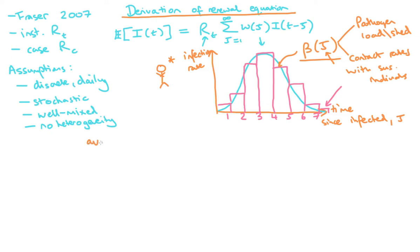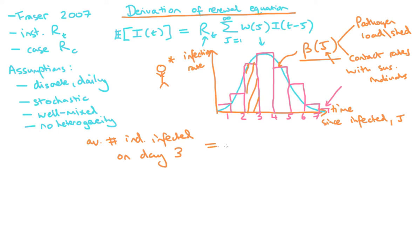We can ask: what is the average number of individuals that a person will infect on day three since they were infected? From the graph, the average number of individuals that person would infect on day three is just the area under the graph on that day, which equals beta(3) times one day. Since beta is a per-day rate of infection, multiplying by one day gives the average number of individuals infected on the third day.